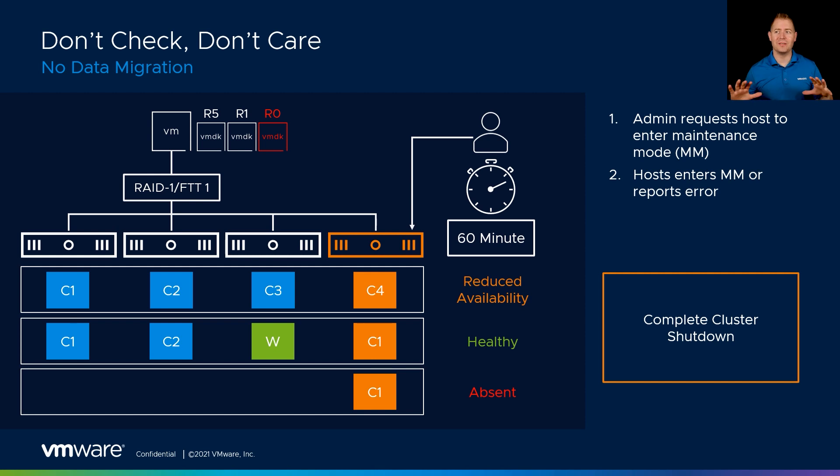Now that we've done a lot of talking about slides, let's jump into vCenter and actually put our host in maintenance mode. We're going to walk through two different ways: the first is doing a data pre-check — this is a what-if simulator — and the second is right-clicking the host, choosing one of our three options, and clicking OK.